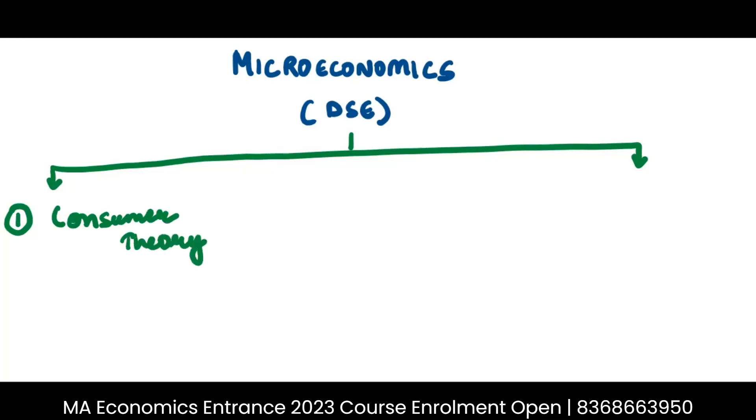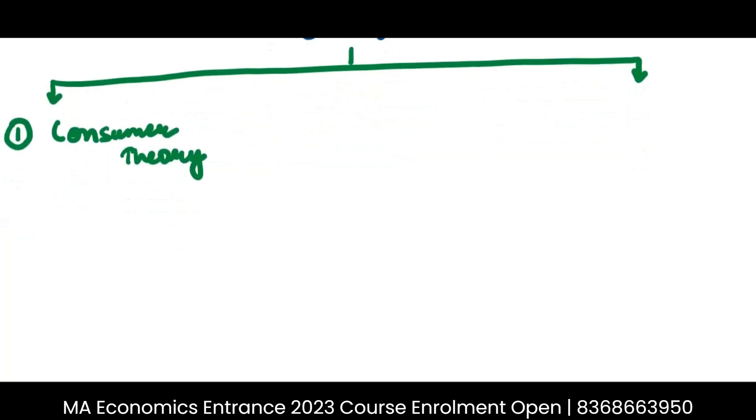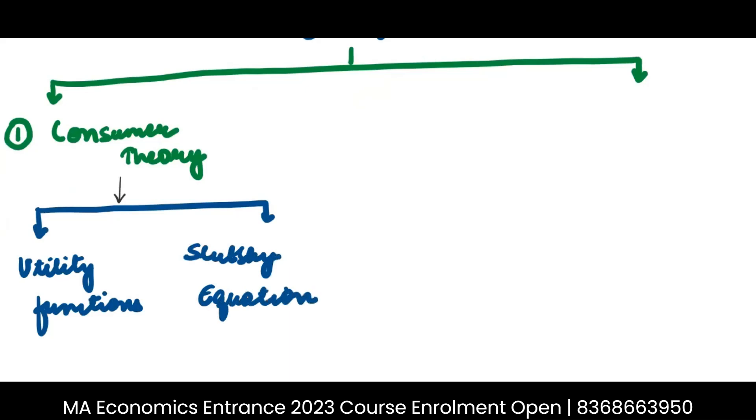In consumer theory, you will majorly see three main types of questions that will be asked in exam. The first type of question will be based out of the different utility functions. Second will be questions on Slutsky equation. And third, there will be questions on Uncertainty. Majorly, these are the three types of questions that will come from consumer theory.